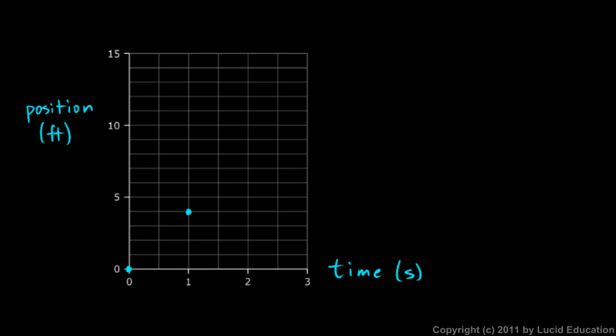Now at 2 seconds, it's gone 8 feet or it's at position 8 feet. So I plot this point right here. And you can see that that corresponds to the 8 right there on our position axis and obviously the 2 right there on the time axis. So that means at this time, at 2 seconds, it's at this position, 8 feet. That's what that point on this graph means.